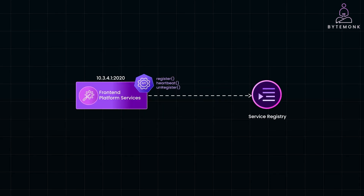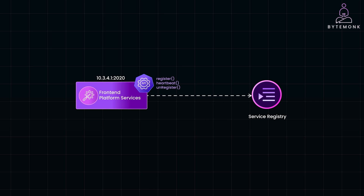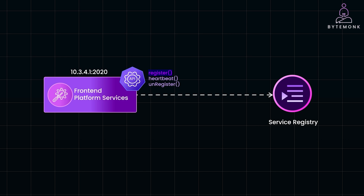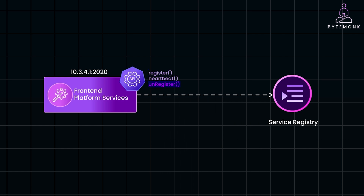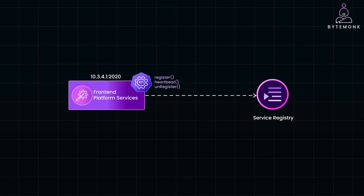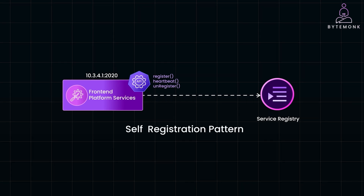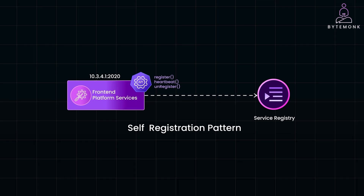The service registry is a key part of service discovery. It needs to be highly available and up to date. Service instances must be registered with and deregistered from the service registry. In a cloud platform, every service has many instances and each instance is being used by an application or a user. When adding a new service to the system, it is common to use the self-registration pattern, in which the service instance is responsible for registering and deregistering itself with the service registry. A service instance also sends a heartbeat request to prevent its registration from expiring.